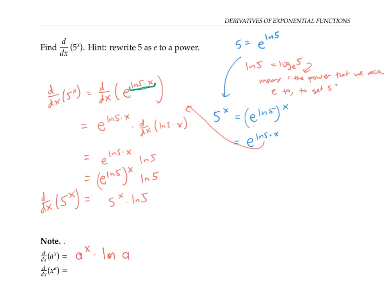You might be wondering what happens if we use this same rule on our old favorite, e to the x. Our base here is e, so we should get e to the x times ln e. But ln e is log base e of e — asking what power do I raise e to in order to get e? The answer is one. So the derivative with respect to x of e to the x, by this new rule, is e to the x times one, which equals e to the x. It agrees with our old rule.